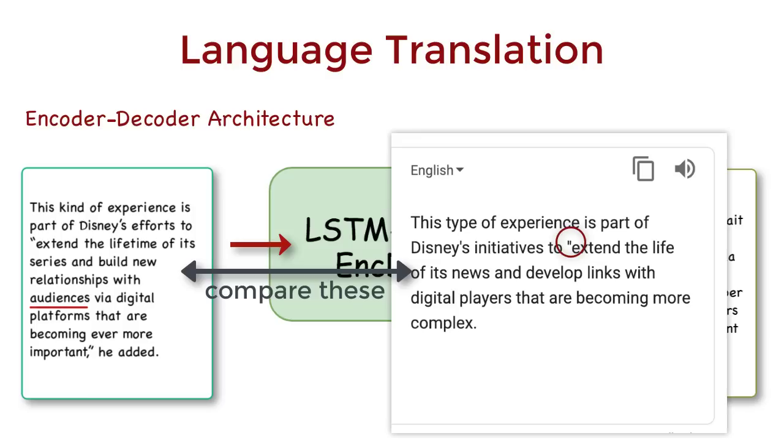Instead of an audience with an online influence, they were addressed as digital players. That's okay, I guess. But then it says the links are becoming more complex. But that isn't the case in the original sentence where it says the relationship is becoming more important.